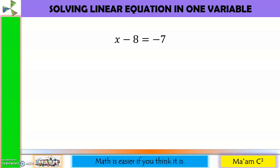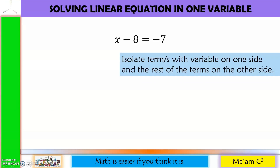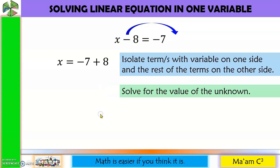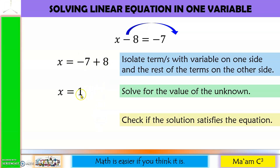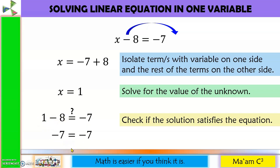Let's have another example. We isolate the term with the variable on one side and move negative 8 to the other side, where it becomes positive. Solving: negative 7 plus 8 equals 1. Checking by substituting 1: 1 minus 8 equals negative 7. They are equal, so x equals 1 is correct.